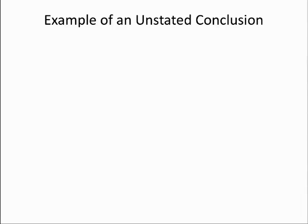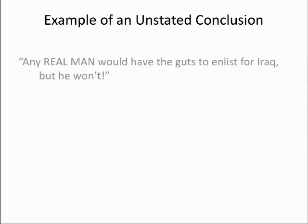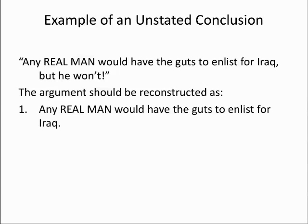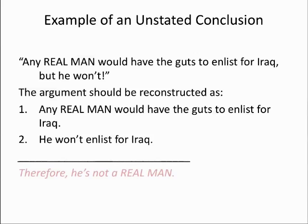We sometimes also have unstated conclusions, but these are much more rare. How about this argument? Any real man would have the guts to enlist for Iraq, but he won't. We need to explicitly state unstated conclusions as well. The argument should be reconstructed as: any real man would have the guts to enlist for Iraq; he won't enlist for Iraq; missing conclusion — therefore, he's not a real man. The author has excluded the conclusion for rhetorical effect, wanting us to draw the conclusion that he's not a real man by ourselves.